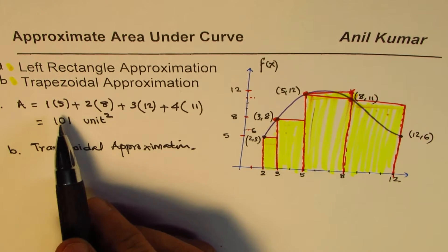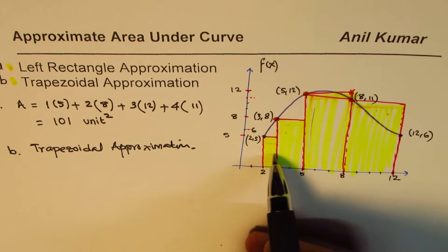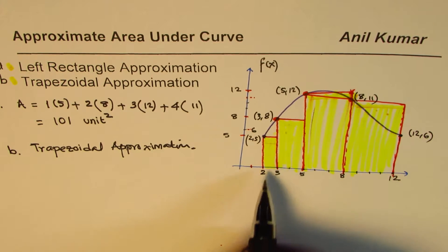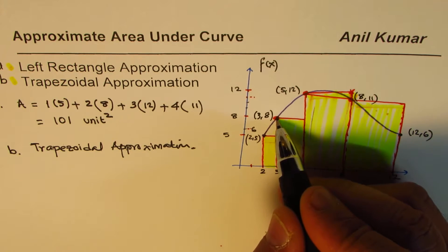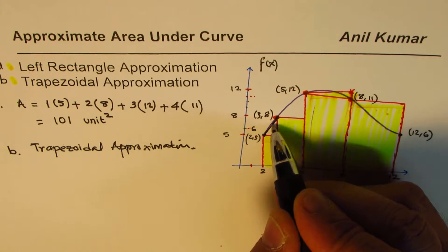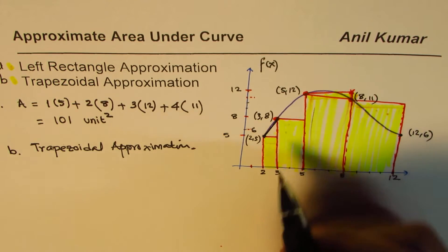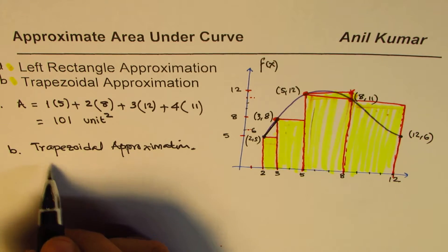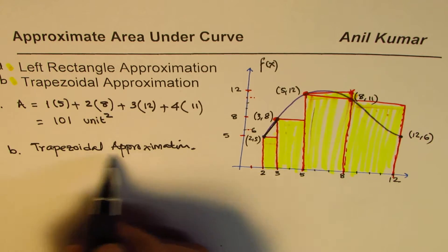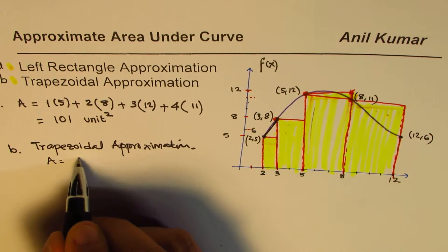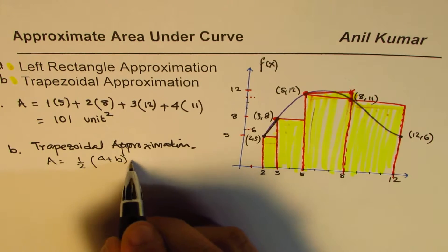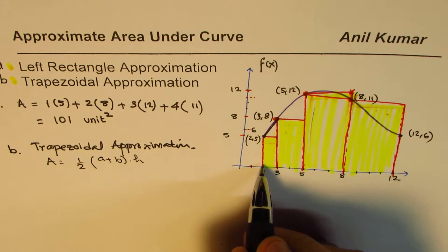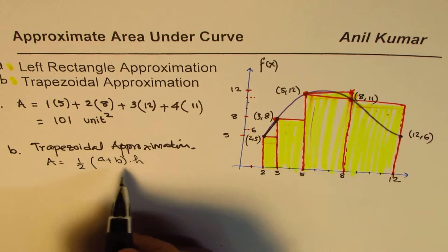Trapezoids have two parallel sides. The distance between them is the height. What we do is connect consecutive function values with a straight line. The general formula for trapezoid area is: half times (a + b) times height, where a and b are the parallel sides and height is the distance between them.